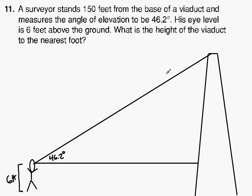Okay, they want you to find out the height of the viaduct. So what you're going to do is you're basically going to find this length, this height right here, and then when we're done, add 6.